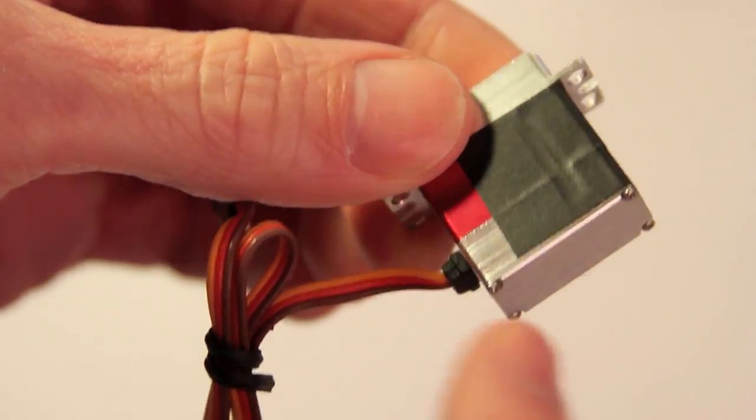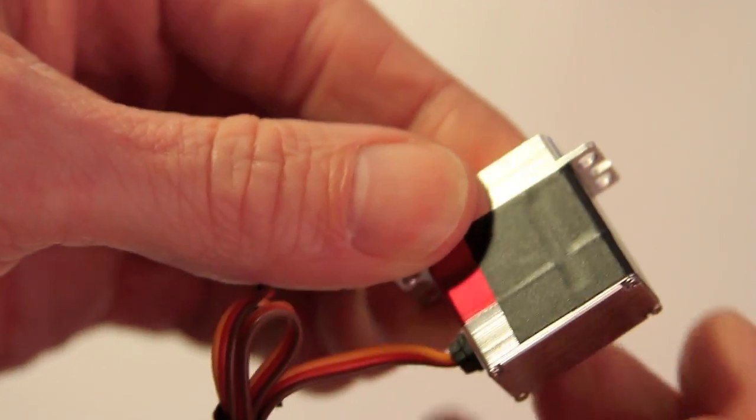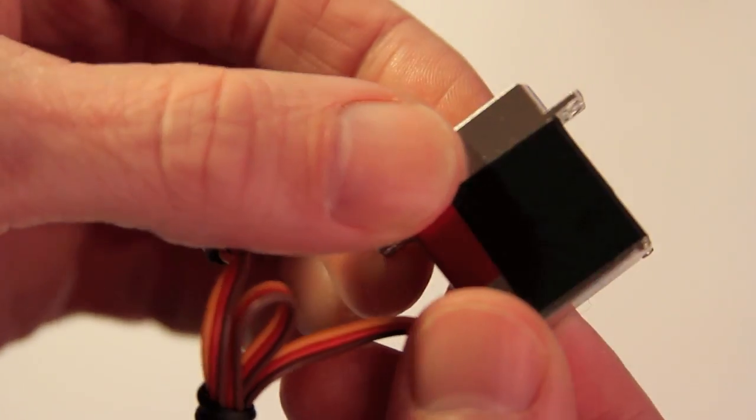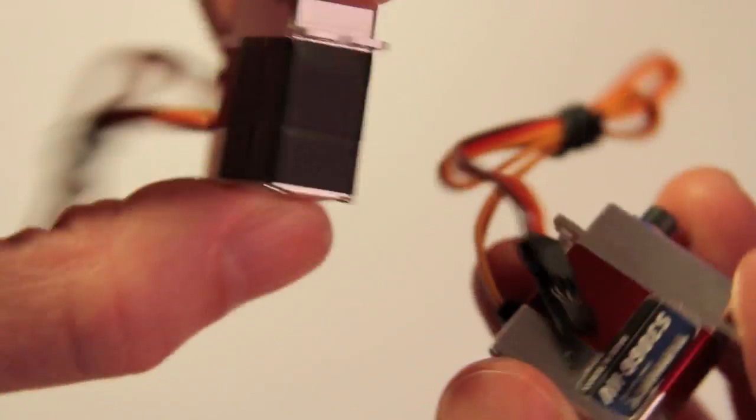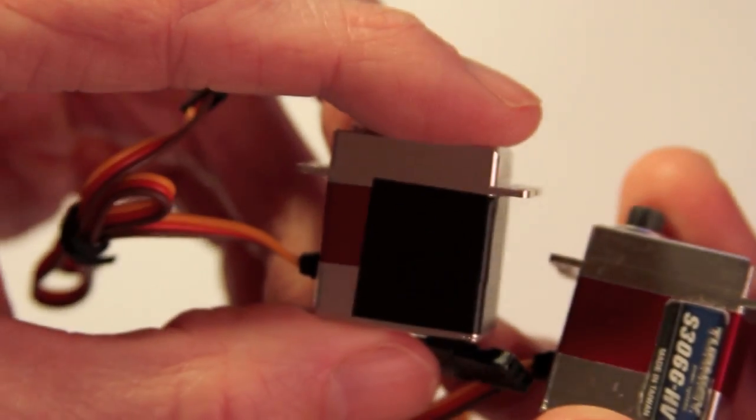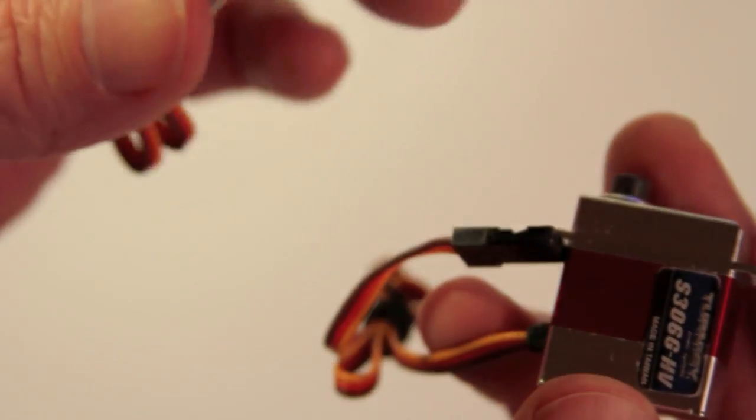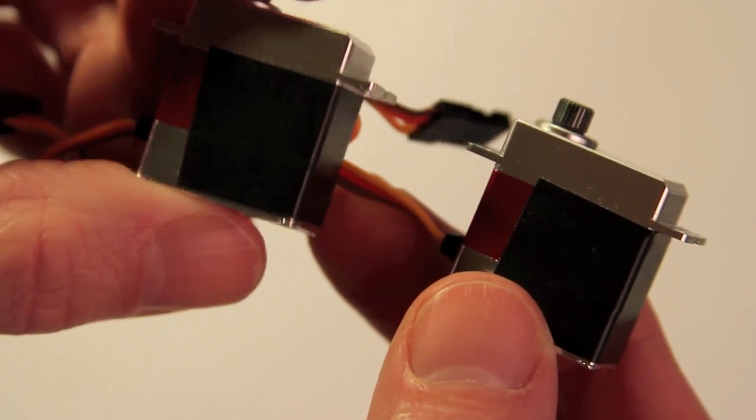So this is a shielded and now somewhat protected servo. And the good news is I can now tell which ones I've worked on and which ones I haven't because if they've got black tape on them, I've already worked on them. So now I've got two of these that have been done. Oops. And two more to go.